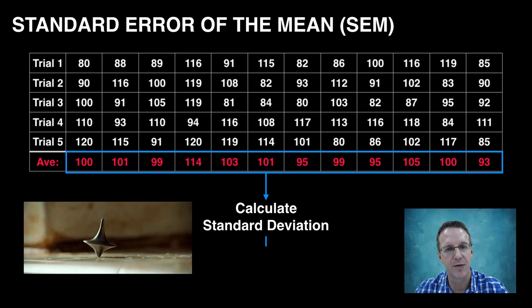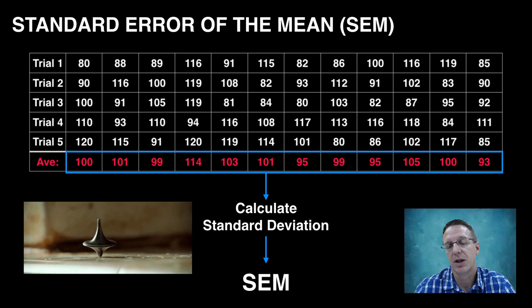And this value is known as the standard error of the mean, which quantifies the precision of the mean. Another way to put that is, is that standard error of the mean is a measure of how far your sample mean is likely to be from the true mean of the population.